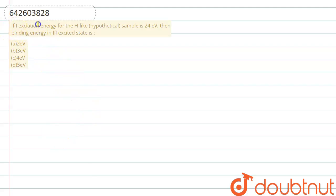Let me explain it to you. If first excitation energy of hydrogen-like hypothetical sample is 24 electron volts, then binding energy in third excited state is what? Okay, so first of all we need to understand that the given atom is not hydrogen.